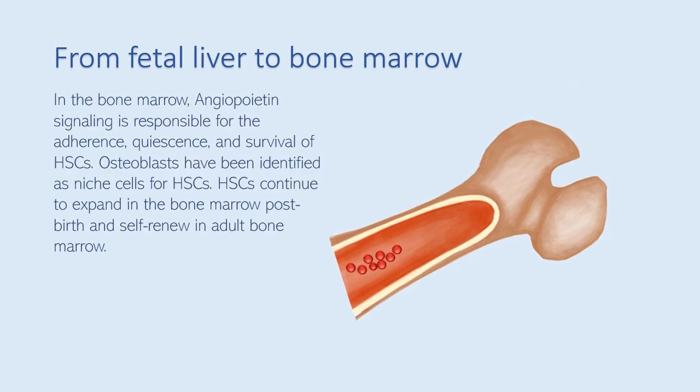In the bone marrow, angiopoietic signaling is responsible for the adherence, quiescence, and survival of hematopoietic stem cells. Osteoblasts have been identified as niche cells for hematopoietic stem cells. Hematopoietic stem cells continue to expand in the bone marrow post-birth and self-renew in adult bone marrow.